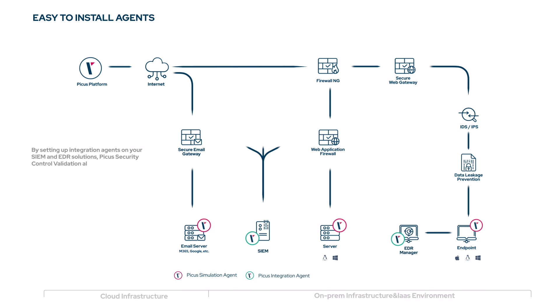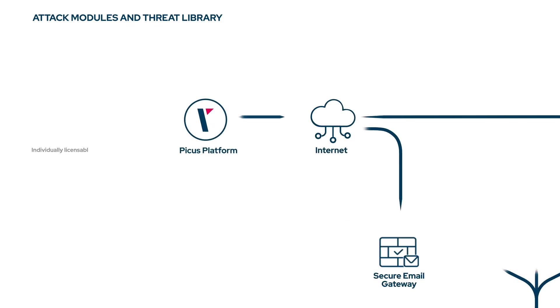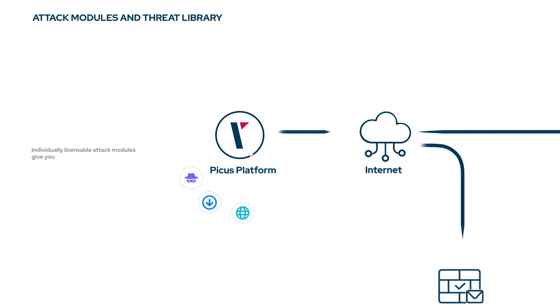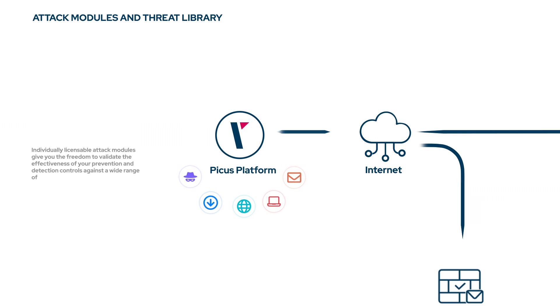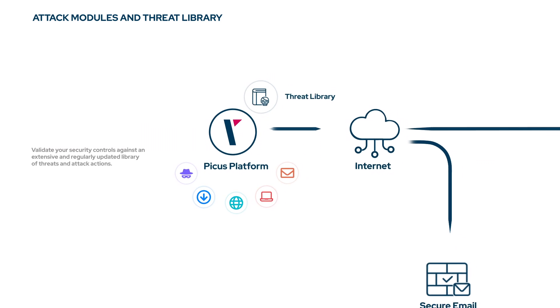PICAS security control validation validates the effectiveness of your organization's threat detection capabilities. Individually licensable attack modules give you the freedom to validate the effectiveness of your prevention and detection controls against a wide range of threats. Validate your security controls against an extensive and regularly updated library of threats and attack actions.